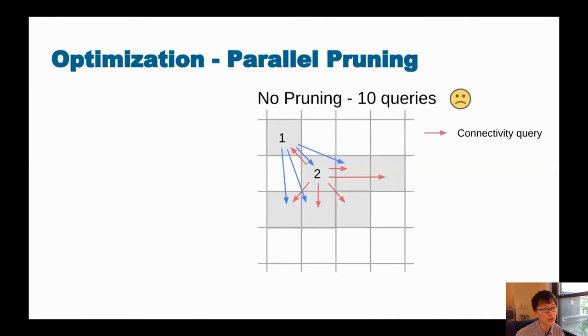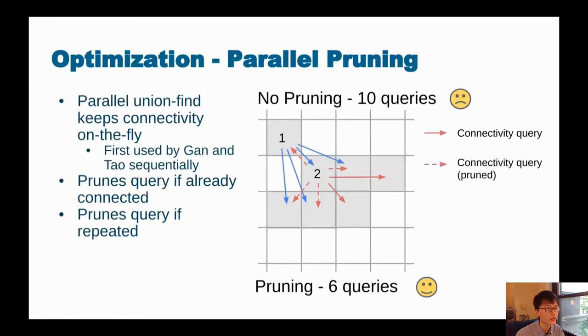And then we also use the parallel pruning technique. Remember the step where, given the cells, we want to determine their connectivities. In the naive case, both cell one and cell two issue queries to all of their neighbors, which sum up to be 10 queries and be expensive. Gan and Tao, in their sequential implementation, first used the union-find data structure to keep the connectivity on-the-fly and prune down queries when necessary.